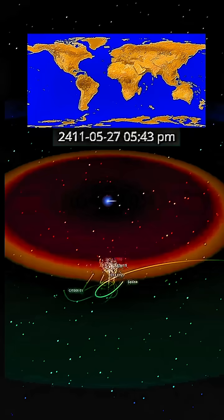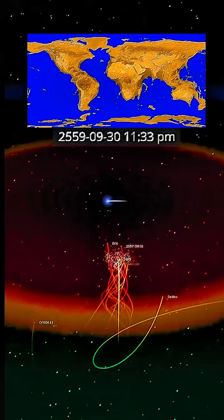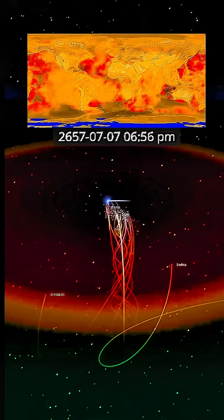The outer planets feel it first. Neptune and Uranus start deviating from their orbits. As our system spirals closer, Jupiter and Saturn's orbits become unstable.